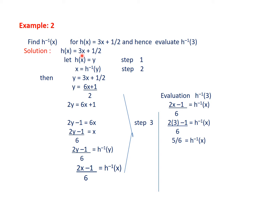Example 2: for the function h(x) = (3x + 1)/2, we find h⁻¹(x) using the same method. We suppose y = h(x), then write x = h⁻¹(y). Substituting y into the given expression, we make x the subject: multiply by 2, subtract 1, then divide by 6, giving x = (2y − 1)/6. Replacing x with h⁻¹(y) and then y with x, we get h⁻¹(x) = (2x − 1)/6.